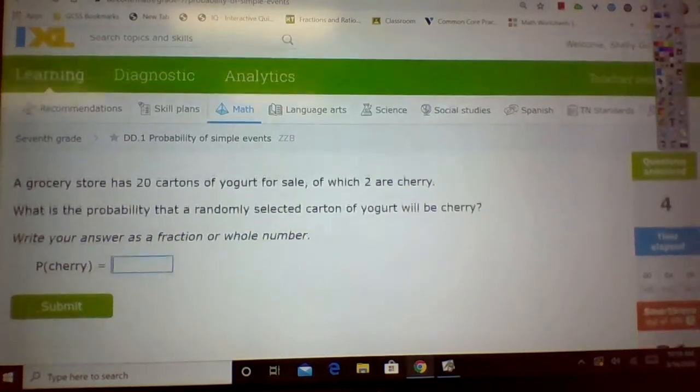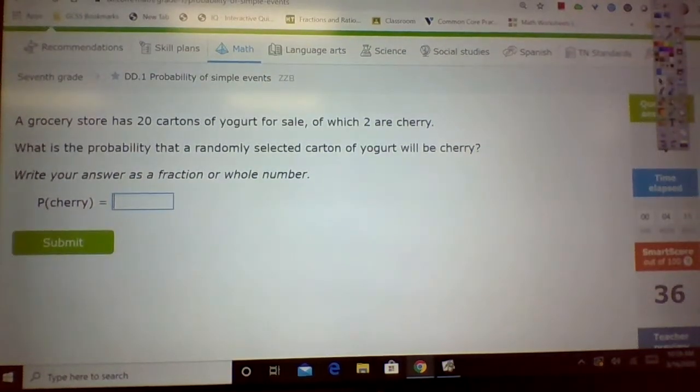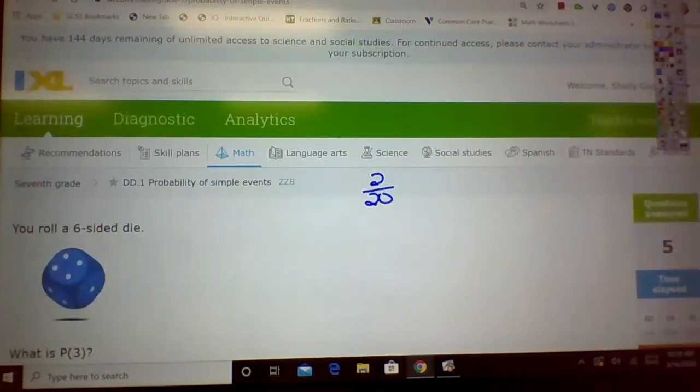Okay. Do you think we should try one more? A grocery store has 20 cartons of yogurt for sale, of which two are cherry. What is the probability that he would pick a cherry yogurt? There are 20 yogurts. Two of those are cherry. So my answer is two out of 20. Two out of 20. There you go.